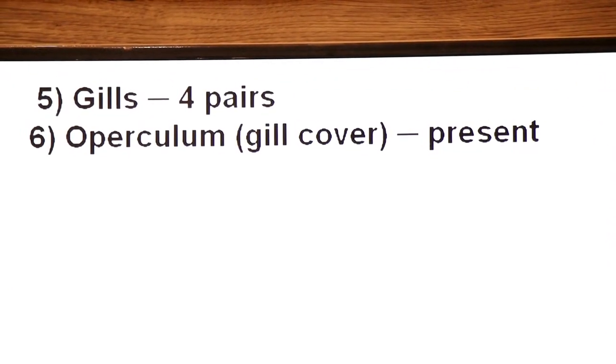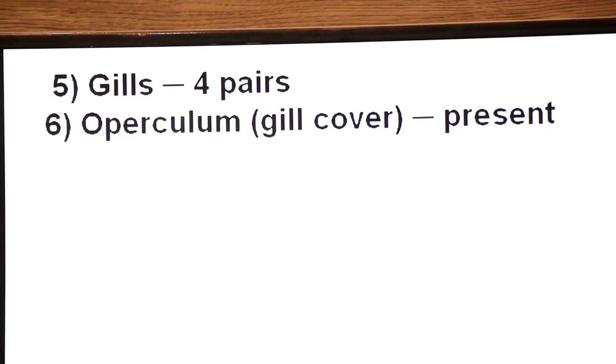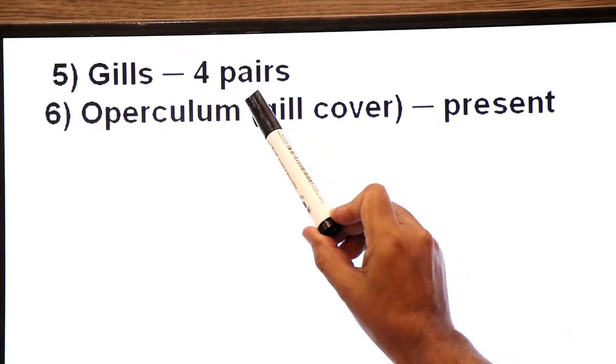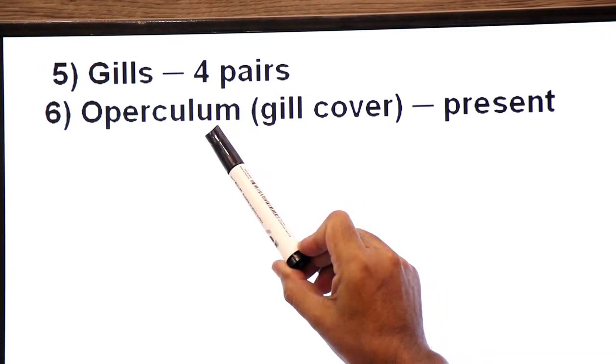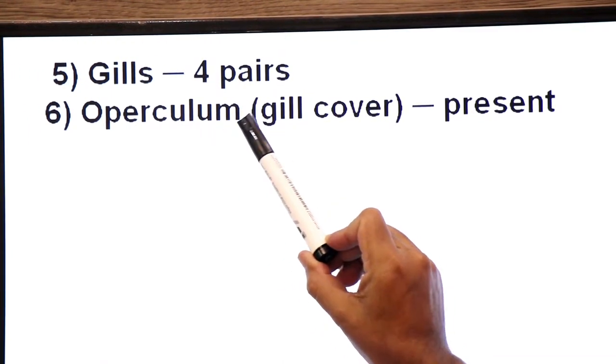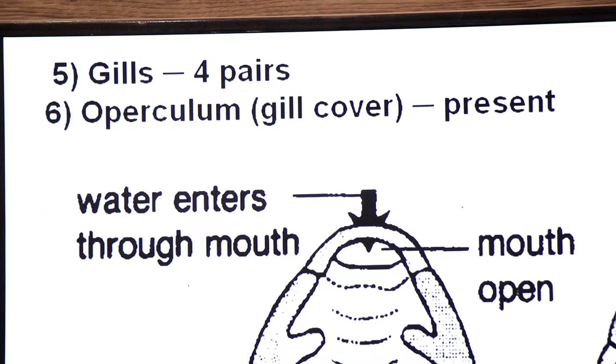Now gills. How many pairs of gills? Four pairs of gills. Dear students, in bony fishes, four pairs of gills are found. And there is a covering over them. That covering is called operculum. Gill cover, gill cover is present. Now we will make this clear on the diagram.